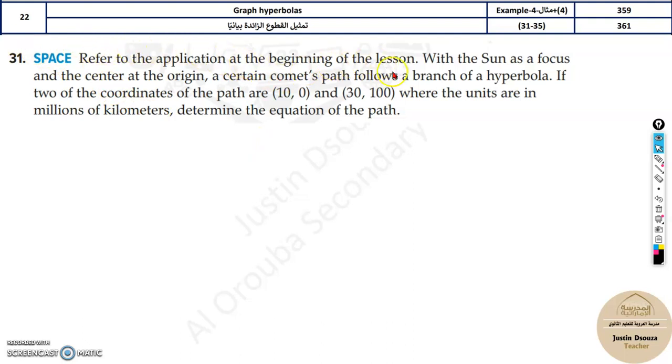Now let's do some other problems. They have asked, referred to the application at the beginning of the lesson, with the sun as a focus and the center is origin. Now over here they have told, center is origin. A certain comet's path follows a branch of hyperbola. If two coordinates of the path are given, where the units are in millions, determine the equation of the path. They have given these two and the center is origin. The two coordinates are given. This is very important.